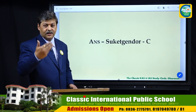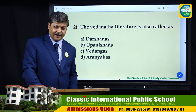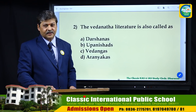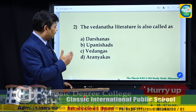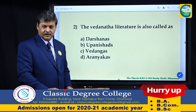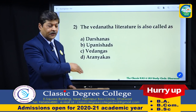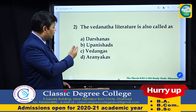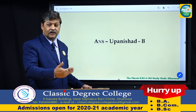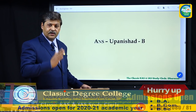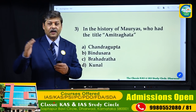This is how questions can be asked in your examination. The next question: the Vedanta literature is also called as — options given are Darshanas, Upanishads, Vedangas, and Aranyakas. All are Vedic literature. The synonymous word for Vedanta is Upanishad, also known as Vedanta meaning the final or concluding part of the Vedas.